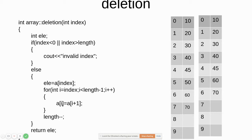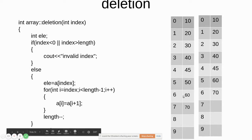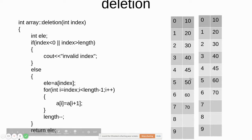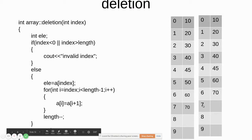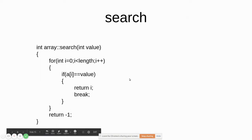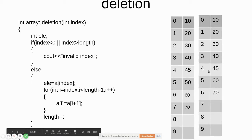Continuing deletion: a[i] is currently 50, and a[i+1] which is index 6 is 60, so 60 is written into a[5]. Then i increments to 6, and a[6] = a[7] which is 70, so 70 is written into a[6]. Finally, since one element has been deleted, we decrement the length: length--.